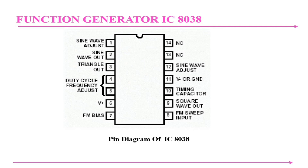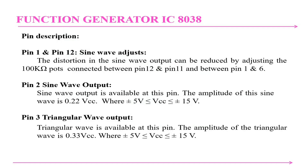The pinout of the ICL8038 is as follows: pin 1 is sine wave adjust, pin 2 is sine wave out, pin 3 is triangle out, pins 4 and 5 are duty cycle and frequency adjust, pin 6 requires supply voltage VCC, pin 7 is FM bias, pin 8 is FM sweep input, pin 9 is square wave output, and pin 10 is timing capacitance. Pins 1 and 12 are sine wave adjust — the distortion on the sine wave output can be reduced by adjusting the 10 kΩ potentiometer connected between pins 12 and 11.